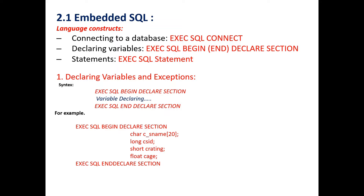To declare variables and exceptions embedded in SQL within the host language program, the SQL statement can refer to a variable defined in the host program. Such host language variables must be prefixed by a colon in the SQL statement, and they are declared between the commands EXEC SQL BEGIN DECLARATION SECTION and EXEC SQL END DECLARATION SECTION. The syntax for declaring variables is EXEC SQL BEGIN DECLARATION SECTION, within which we declare the variables, ending with EXEC SQL END DECLARATION SECTION.